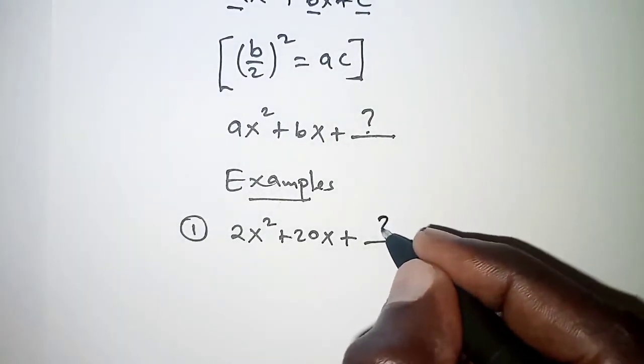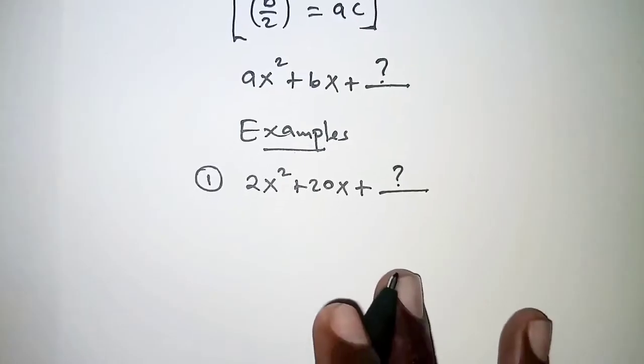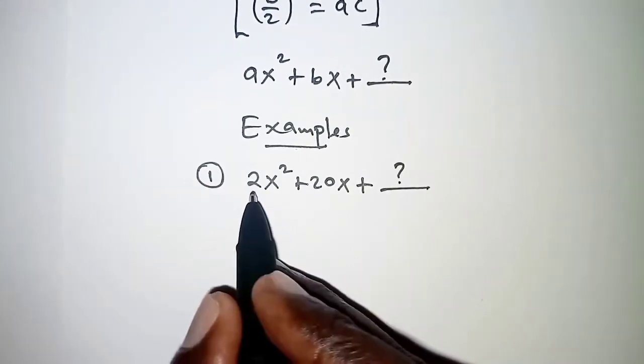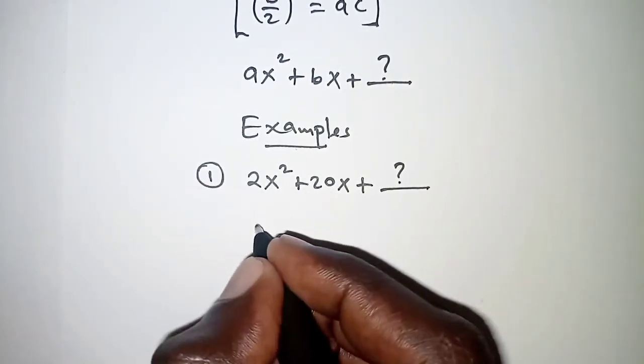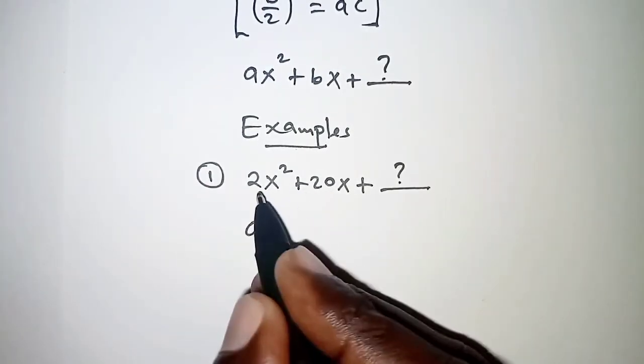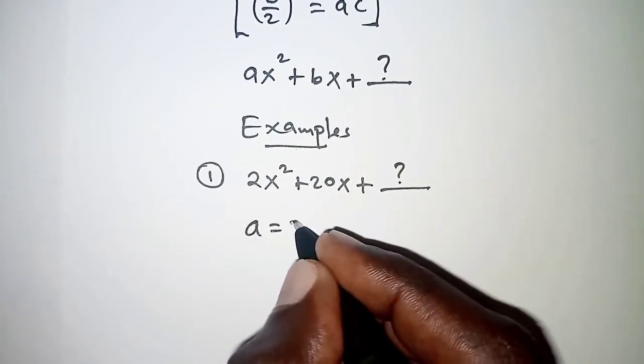then what is that c? So this is how we complete the square. Once again, we can identify here that a is the coefficient of x² which is 2,